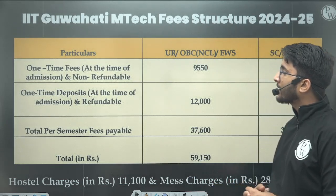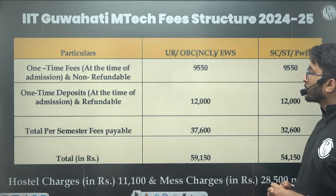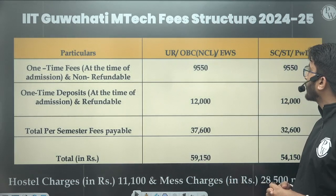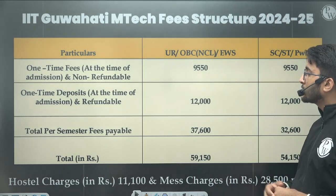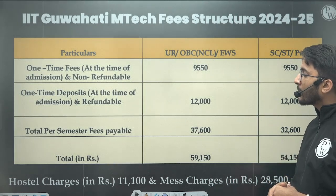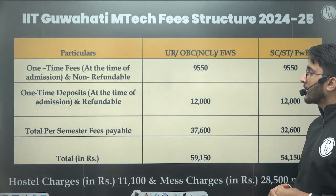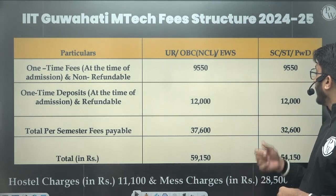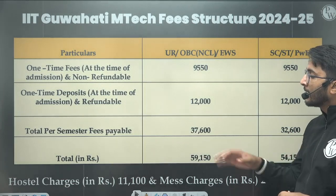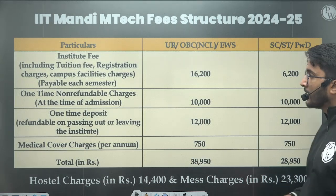For IIT Guwahati, the one-time fees is ₹9,550, which is the same for General, OBC-NCL, EWS, and similarly for SC, ST, and PWD. The one-time deposit is ₹12,000 for both categories. The total per semester fees is ₹37,600 for General, OBC-NCL, and EWS, and ₹32,600 for SC, ST, and PWD. Hostel and mess charges are also attached here.